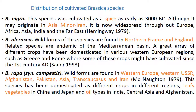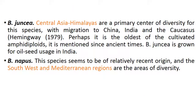Brassica rapa, also known as Brassica campestris, has wild forms found in Western Europe, Western USSR, Afghanistan, Pakistan, Asia, and Iran. This species has been domesticated as different crops in different regions — as a leafy vegetable in China and Japan, and as oil types in India, Central Asia, and Afghanistan. Brassica juncea: Central Asia and the Himalayas are the primary center of diversity, with migration to China, India, and the Caucasus.